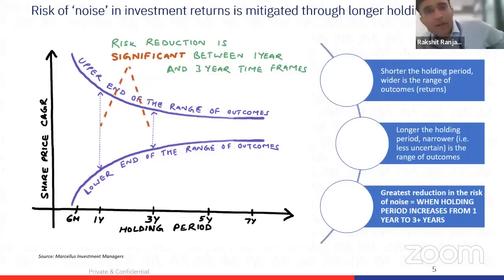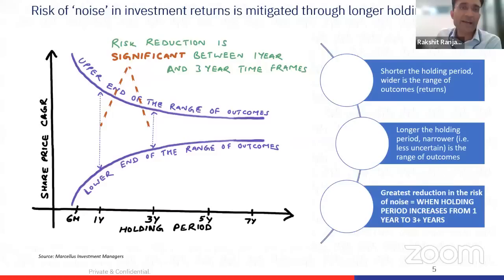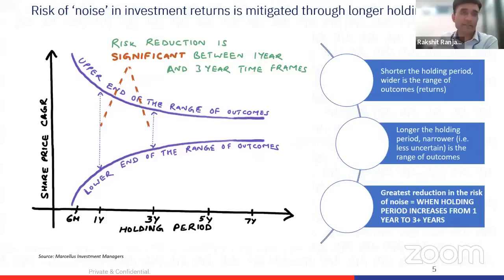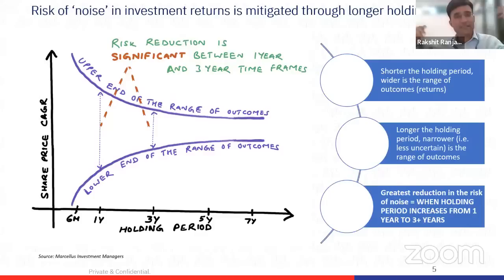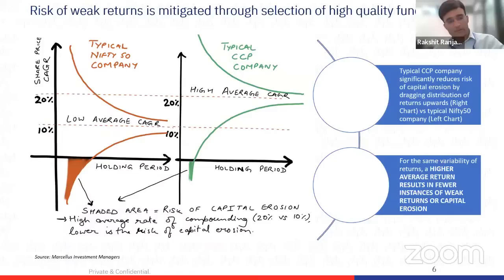The moment you look at returns for holding periods longer than three years, you're looking at outcomes of factors which are more fundamental and less luck-oriented. The moment you look at returns for time periods less than one year, you're looking at outcomes based on factors that are more noise-oriented and luck-oriented, less fundamentals-oriented. Hence the gap is very wide between the upper and lower end of the range. The biggest reduction in noise happens when you move from a one-year to a three-year holding period.